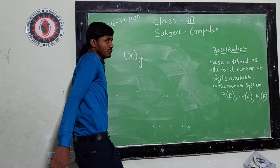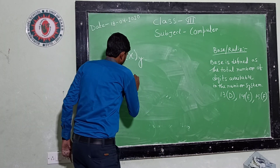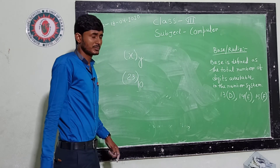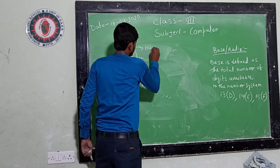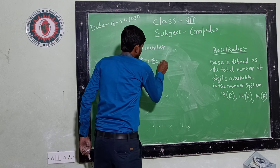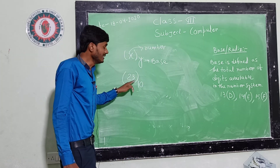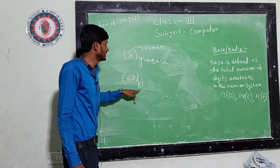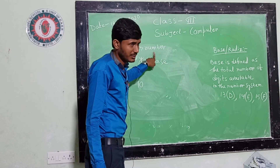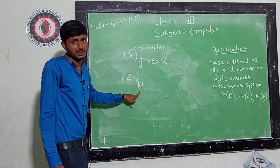For example, we can write x subscript y, which means x is the particular number and y is the base. So for example, we can write 23 base 10. That means the digits 2 and 3 belong to which number system? That is the decimal number system. So 23 is in decimal form.